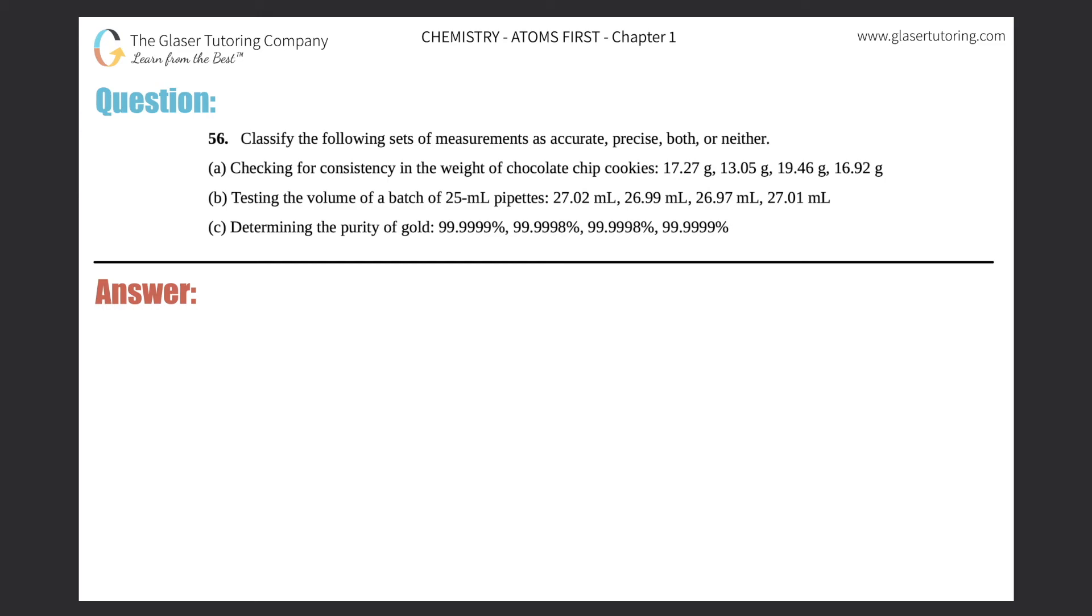Number 56: Classify the following set of measurements as accurate, precise, both, or neither. Okay, so we only got a, b, and c here, so I'll just list a, b, and c. Now let's first quickly go over the differences between accurate and precise.